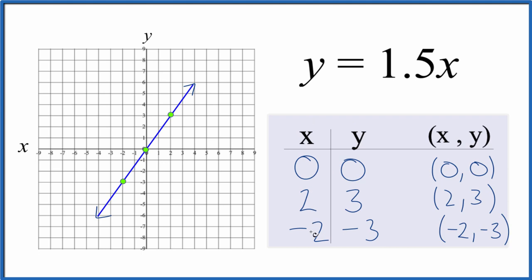You could put any values in for x and the resulting value for y would give you a point that would be somewhere on this line. I chose these partially to give whole numbers and also so it just fits on my graph paper here. You could also use slope intercept formula to graph y equals 1.5x. There's a link at the end of this video if you need help with that.